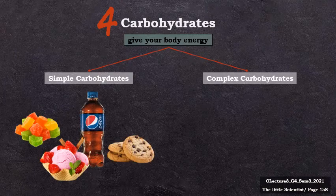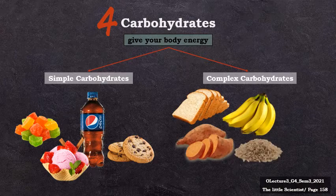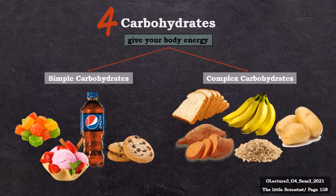Simple sugars are found in candies, ice creams, Pepsi, and biscuits. These carbs are easily broken down and they can cause blood sugar levels to rise quickly. Complex carbohydrates, on the other hand, are broken down more slowly, and they allow blood sugar to rise gradually. Complex carbohydrates or starches are found in bananas, potatoes, bread, sweet potatoes, and other examples of food.